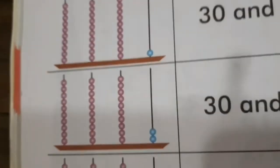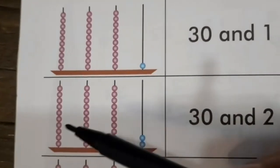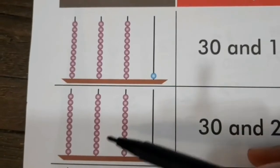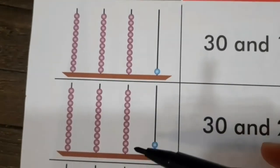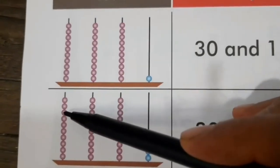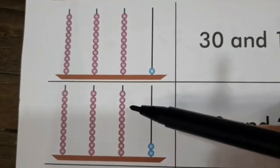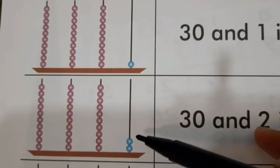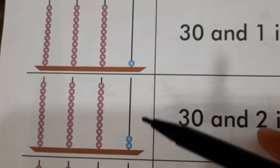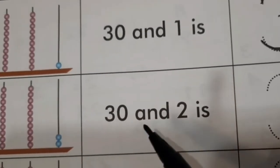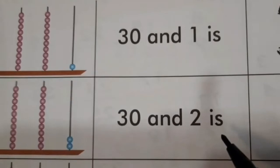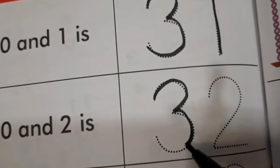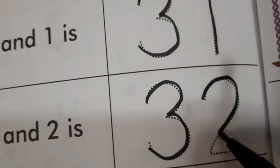Now, we move on to the next one. Again, we have 10 beads in the first line, 10 beads in the second line and 10 beads in the third line. So, we have 10, 20 and 30. And in the fourth one, we have 2 beads — those are only 2 beads. So, we have 3, 0 — 30 and 2, which is 3, 2 — 32. So, we will be tracing the number 3, 2, 32.